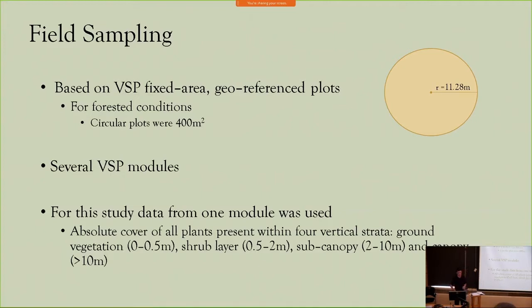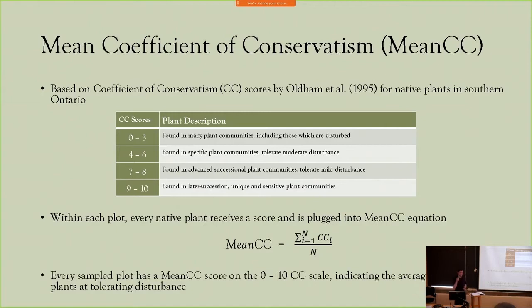In order to assess the quality of native vegetation, this study uses the mean coefficient of conservatism, which is a floristic quality assessment. It's based on the coefficient of conservatism scores assigned by Oldham, Bukowski, and Sutherland for native plants in southern Ontario. Plants receive a score on a 0 to 10 scale, with lower scores indicating plant communities that can tolerate a high degree of disturbance, whereas higher scores are associated with plant communities that are more sensitive and unique. Within each plot, every native plant receives a score and you calculate the average, which indicates the average capacity of the native plants for tolerating disturbance.